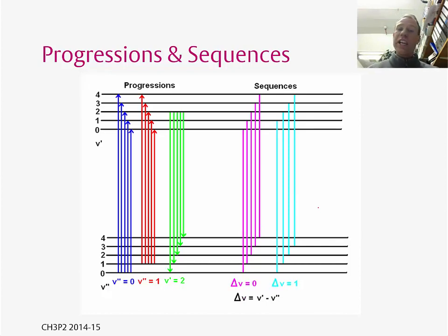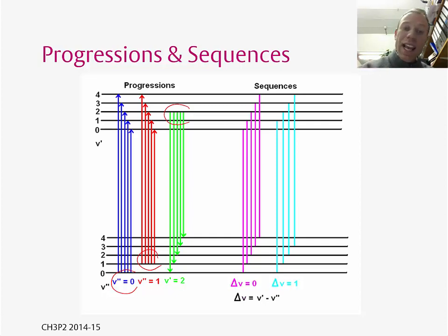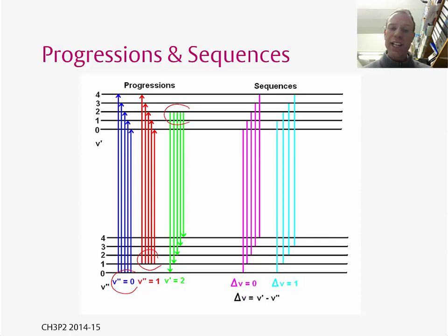You can now get a whole series of transitions, so if you did the iodine experiment in second year you got a whole series of peaks in your spectrum. These peaks can be broken down into progressions or sequences. Progressions are where all of the molecules share a common starting vibrational state — for example all starting in the ground vibrational state or all starting in the first excited vibrational state. Sequences do not share the same starting point, but they represent a similar transition between the two electronic states.